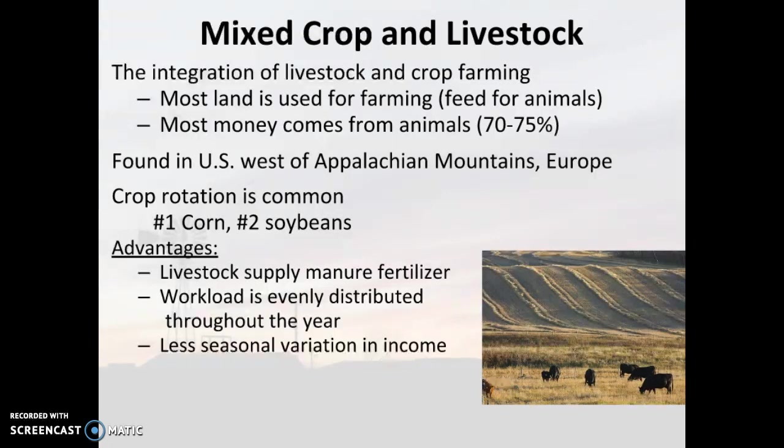Mixed crop and livestock occurs in this area quite a bit. It's found in the United States west of the Appalachian Mountains, and also found across Europe, primarily in Eastern Europe. This is the integration of livestock and crop farming. You're not going to need a huge amount of land for this; however, the majority of the land that you do have is going to be used for crops.